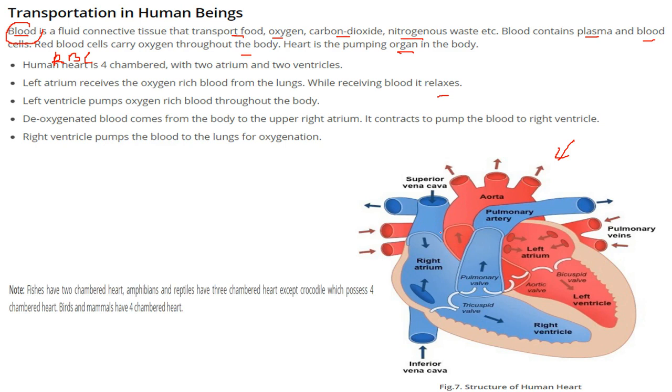The heart has four chambers in human beings. There are two atriums - left and right atrium, and two ventricles - left ventricle and right ventricle.